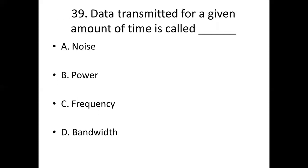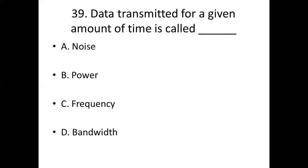39th bit. Data transmitted for a given amount of time is called dash. Option A: noise. Option B: power. Option C: frequency. Option D: bandwidth. Answer: Option D, bandwidth.